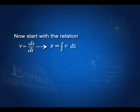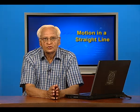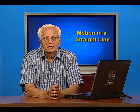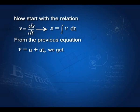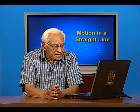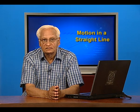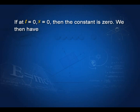For the next equation, we use the relation v equal to ds/dt, so that s is equal to the integral of v dt. From the previous equation, v is equal to u plus at. We substitute and integrate to get s equal to ut plus half at squared plus a constant. If initially s is equal to 0, then the constant is 0 and we get s equal to ut plus half at squared.